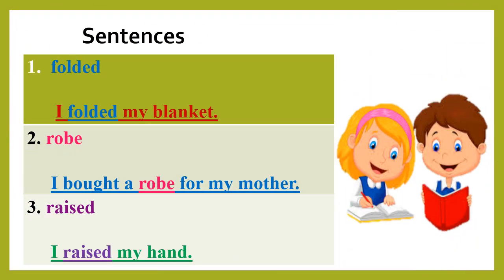Now we will make sentences using the same dictation words. The first word was folded, and the sentence is: I folded my blanket. You can change the subject here — for example, I folded my dress. The second word is robe, and the sentence is: I bought a robe for my mother.